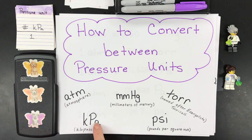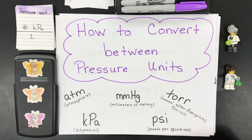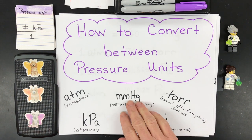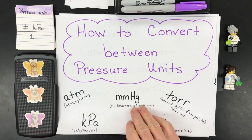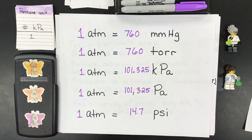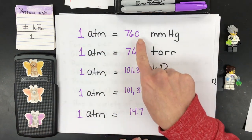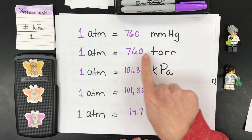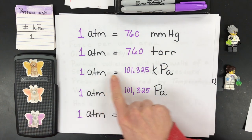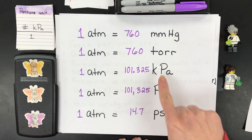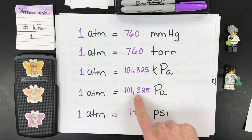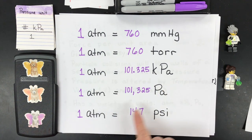PSI is pounds per square inch. kPa is commonly used in physics and pounds per square inch we use in everyday life for our bike tires and car tires. What I'm going to do first is show how all these are related to each other. One ATM is equal to 760 mmHg or 760 torr. It's equal to 101.325 kPa, and 1 ATM equals 14.7 psi. You're going to need those to do these calculations correctly.